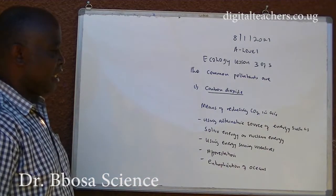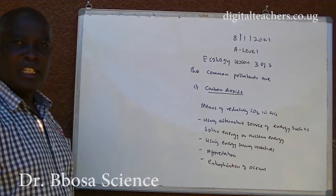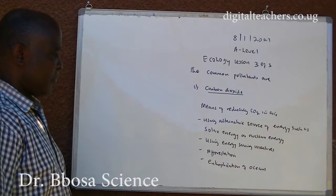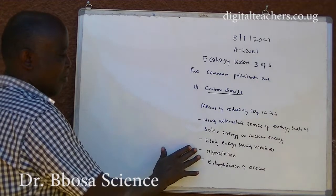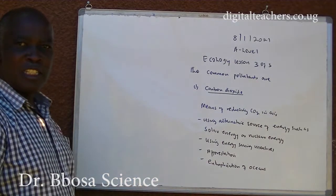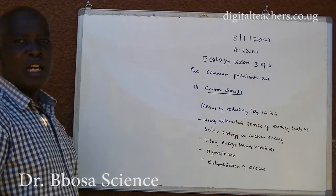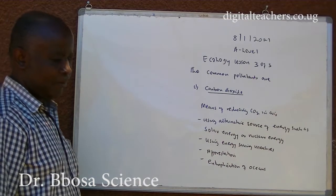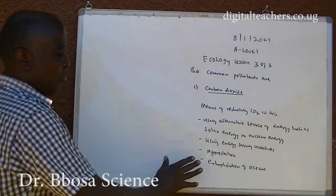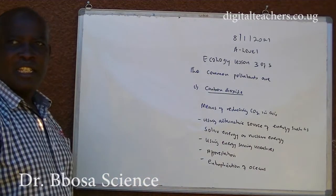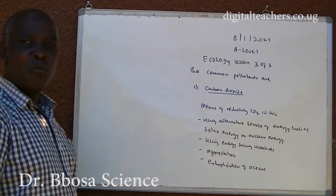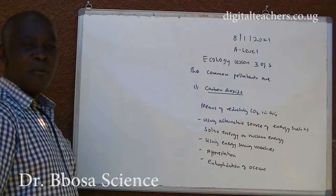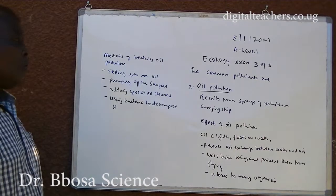Using energy-saving measures, such as energy-saving stoves. Afforestation, such that trees absorb carbon dioxide during photosynthesis. Fertilization of oceans, such that algal blooms absorb carbon dioxide.